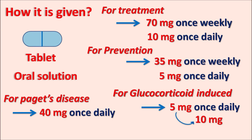The dose depends on the clinical indication. For treatment of osteoporosis in men and women: 70 mg once weekly or 10 mg once daily. For prevention of osteoporosis: 35 mg once weekly or 5 mg once daily. For glucocorticoid-induced osteoporosis: 5 mg once daily, possibly increased to 10 mg. For Paget's disease: 40 mg once daily for six months. Please subscribe to our channel, share this video with your friends, and post your comments. Thank you for watching.